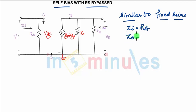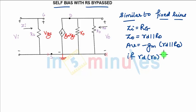And ZO is nothing but small RO parallel to RD, and voltage gain is nothing but minus GM into RD parallel to RO. Now if my small RO or say output resistance RO is very much greater than RD.